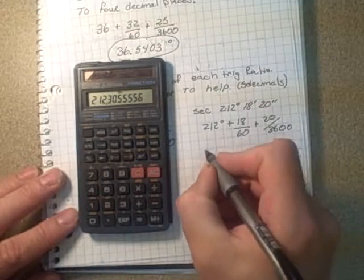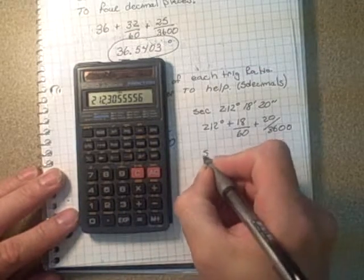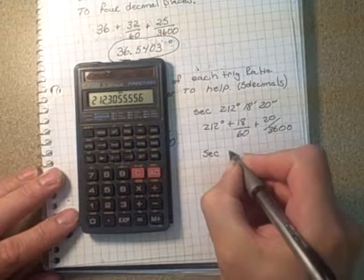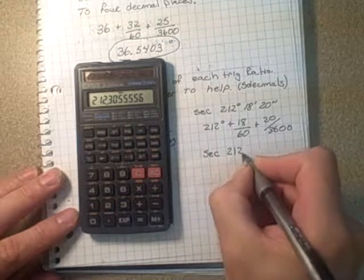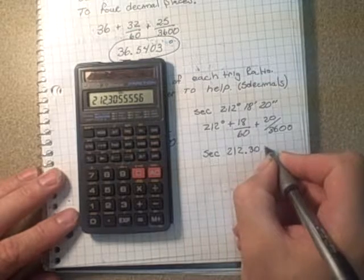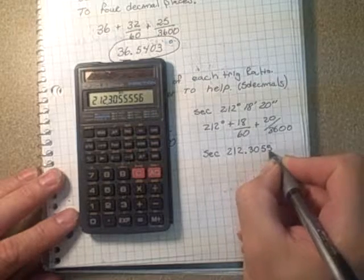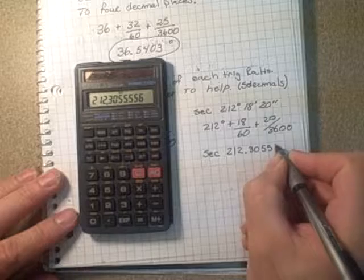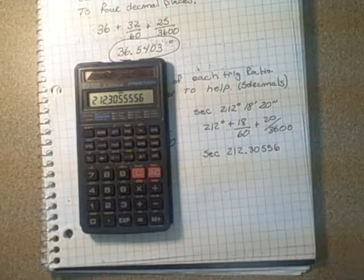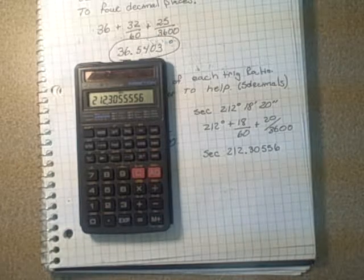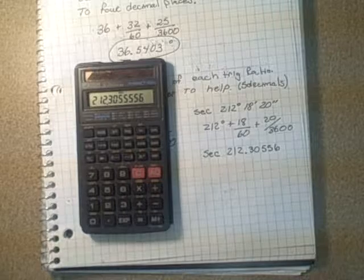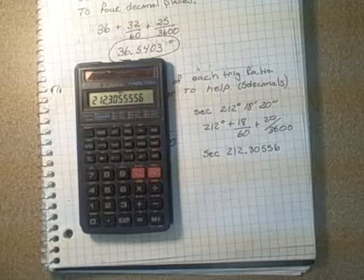So I'm going to say that I have secant of 212.30556 if I go down to 5 decimal places. Now, if I want to do the cosine of it, I'm going to get, I can take the cosine of it.